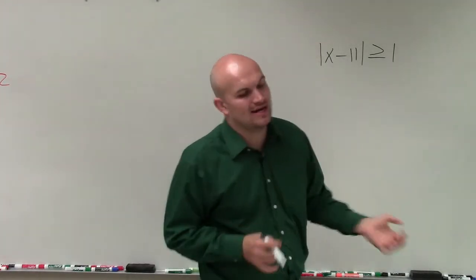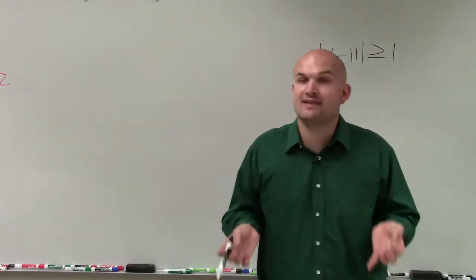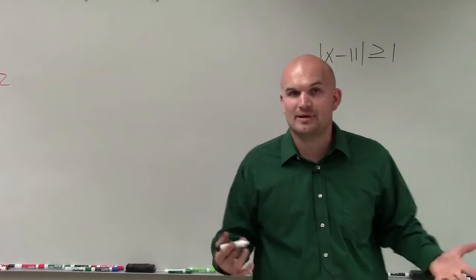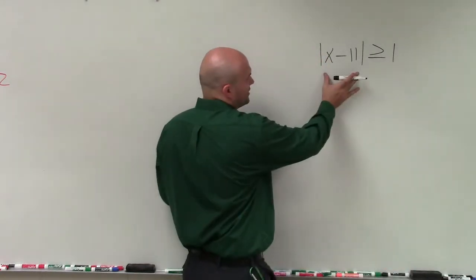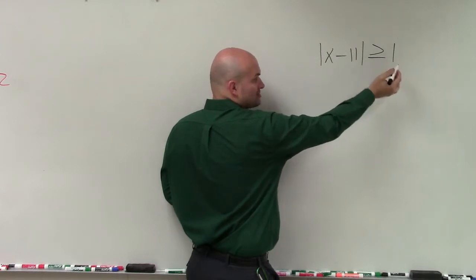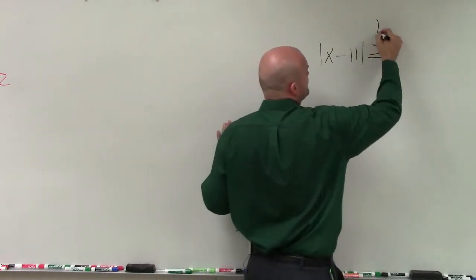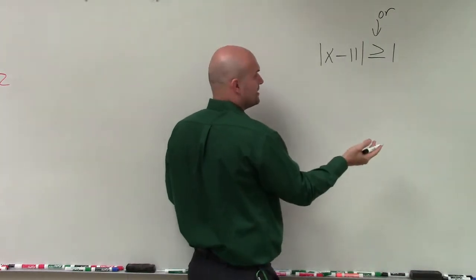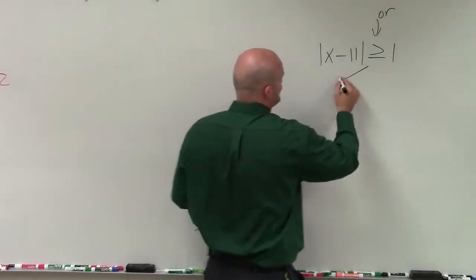And the main important thing before starting any absolute value inequality is identifying, when you create your two solutions, are you going to have an AND or an OR compound inequality? And whenever your absolute value symbol is greater than your other value or expression, then you know that this is going to be an OR. When it's less than or less than or equal to, it will be an AND compound inequality. So now I can create my two cases.